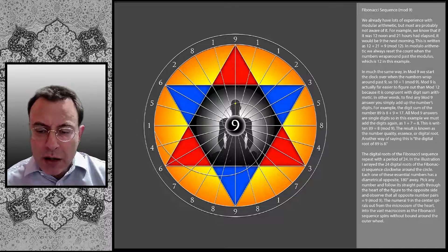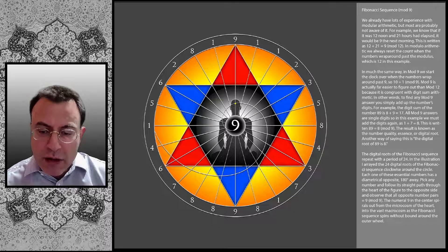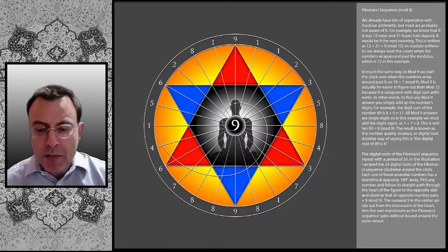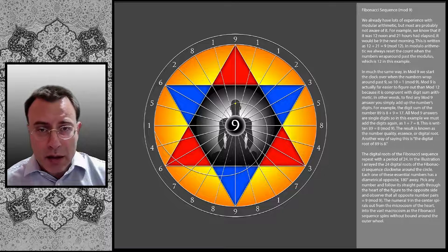Pick any number and follow its straight path through the heart of the figure to the opposite side, and observe that all opposite number pairs are congruent with 9 mod 9.